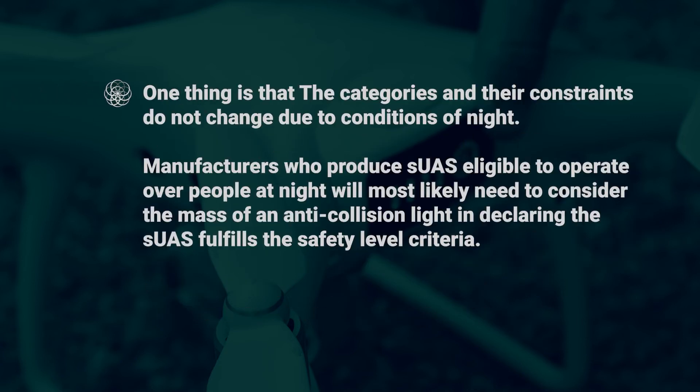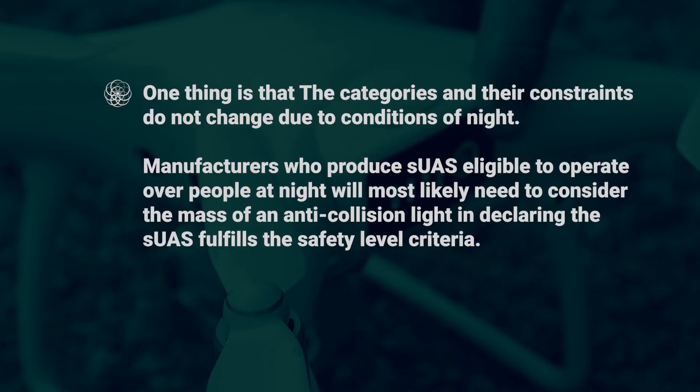Remember, the categories and their constraints do not change due to conditions of night. Manufacturers who produce SUAS eligible to operate over people at night will most likely need to consider the mass of the anti-collision lights in declaring the SUAS fulfills the safety level criteria. In the next section, we'll discuss the categories in more detail. It's important to have these categories clear so that we know exactly what we can and cannot do.